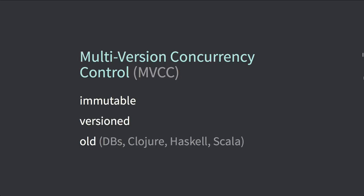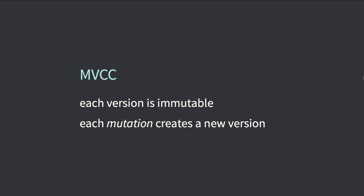Now let's talk about how we can make immutable data structures perform nicely. There's something called multiversion concurrency control — unfortunately abbreviated MVCC, very close to MVC. Main characteristics: the data is immutable and versioned. The MVCC concept is quite old — it's been in relational databases for decades for transactions. It was more recently adopted by Clojure, Haskell, Scala, and in-memory systems. The basic assumption is that each version is immutable and each mutation creates a new version.